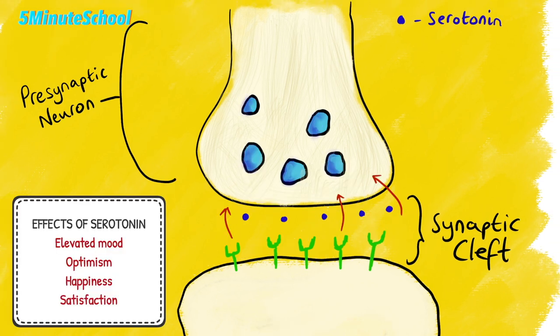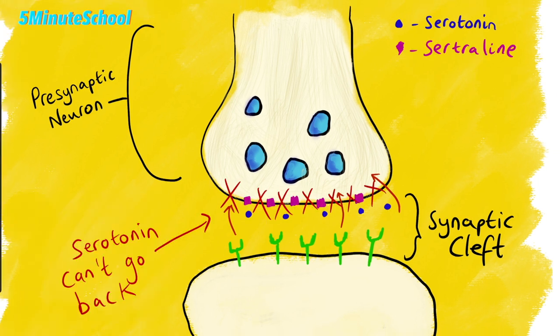The effects of serotonin include elevated mood, optimism, happiness, and satisfaction. Normally the serotonin is released but eventually returns back to the presynaptic neuron. The basic principle of sertraline is that it prevents serotonin from moving back to the presynaptic neuron, so it remains in the cleft, binding to these receptors and keeping mood elevated.